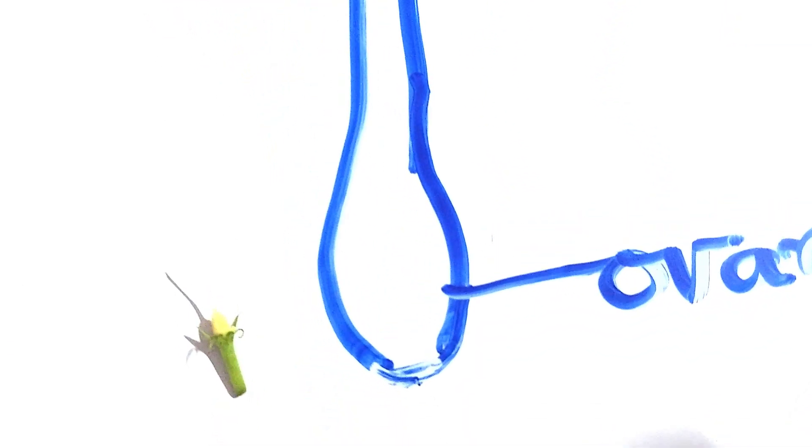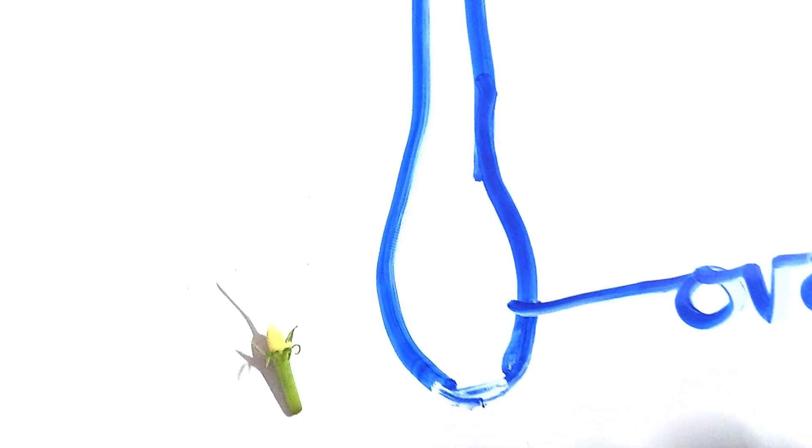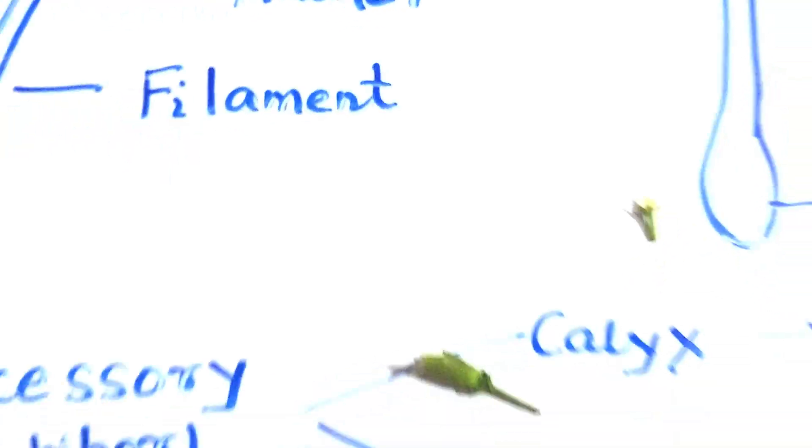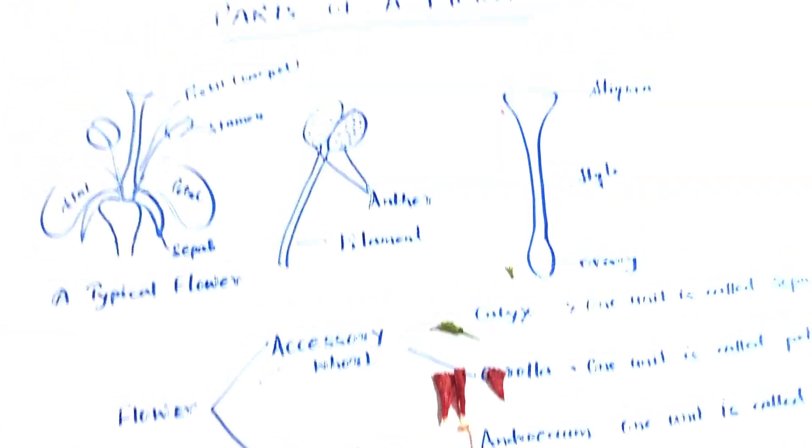This tubular part is called the style, and this swollen part is called the ovary. So, this is the class where we study the different parts of a flower. Thank you.